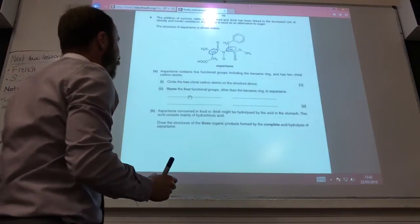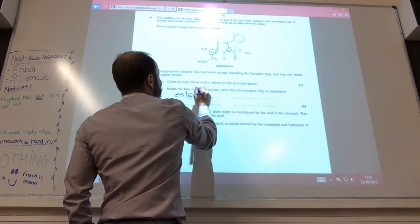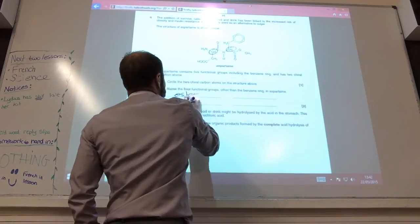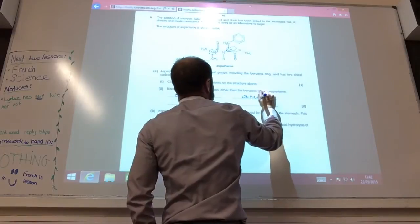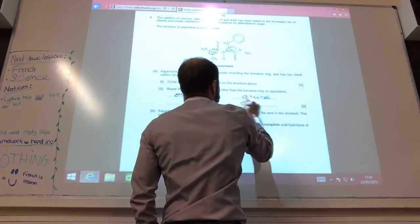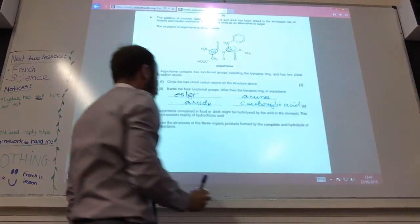Name the four functional groups apart from the benzene ring. That's an ester there. That is an amide there. That's an amine there. And that is a carboxylic acid.